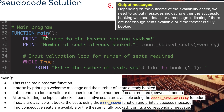Then we have the main program - a function called 'main'. It prints a welcome message to the theatre booking system, prints the number of seats already booked by calling 'count_booked_seats' on the evening array. It then enters a loop to validate the user's input for the number of seats required - checking whether someone has entered one, two, three, or four. After validating, it checks if consecutive seats are available using the 'check_availability' function. If seats are available, it books them using the 'book_seats' function and prints a success message. If no consecutive seats are available or the theatre is fully booked, it prints a corresponding message.